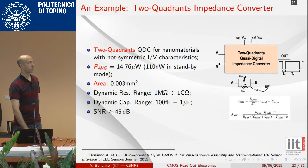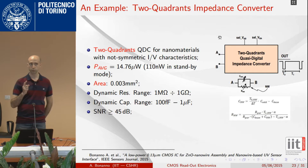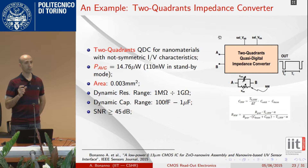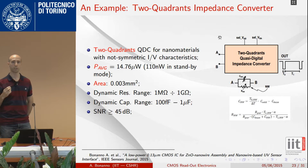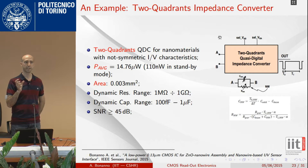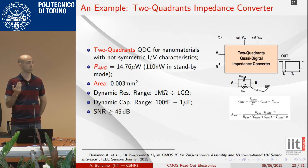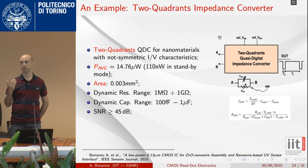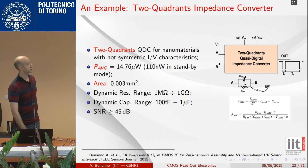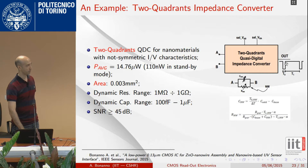Another challenge is that when you integrate your nanosensor, the nanomaterial is not symmetric — you cannot decide which quadrant of the IV curve you are monitoring. So the readout circuit has to change the polarity of the stimulation signal to exploit the sensitivity of the nanomaterial in the first or third quadrant of the IV curve. This circuit distinguishes the two contributions of the nanowire — resistance and capacitance — and converts them to a one-bit digital signal.